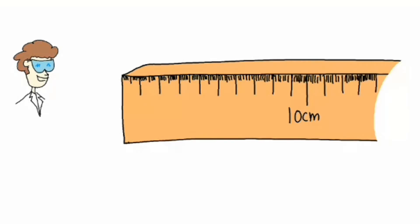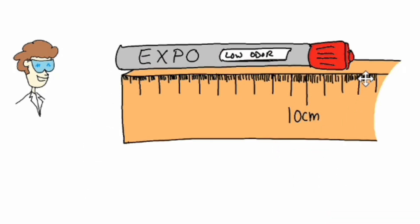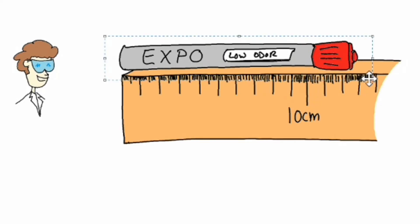Now say we want to measure something like an expo marker. We lined it up from 0 to as far as it extends. I'm going to draw a line here so you can see where the end of the red cap meets on the meter stick. It's going to be definitely past the 10 centimeter mark, and we can see the larger lines representing centimeters.